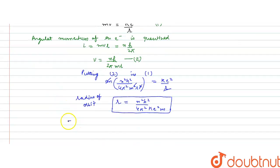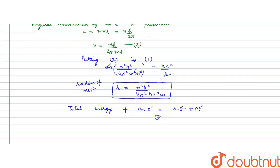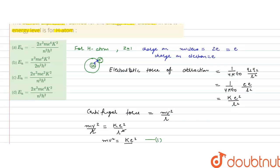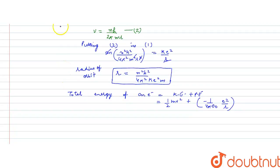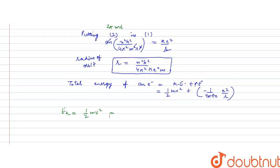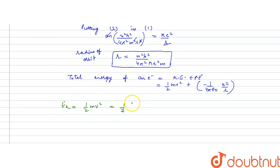The total energy of an electron equals kinetic energy plus potential energy. Kinetic energy is ½mv², and potential energy is −(1/4πε₀) × e²/r, which equals −ke²/r. To calculate the kinetic energy, Ek = ½mv², and substituting mv² = ke²/r from equation 1, we get Ek = ½ × ke²/r. Now putting the value of r into this expression: